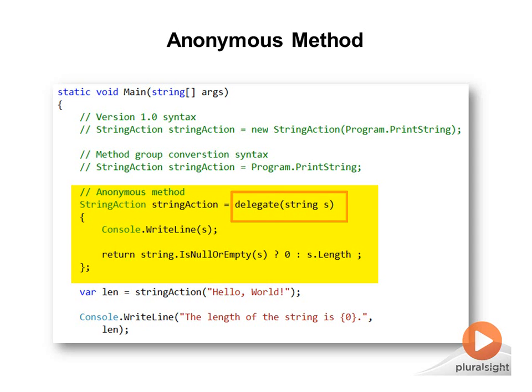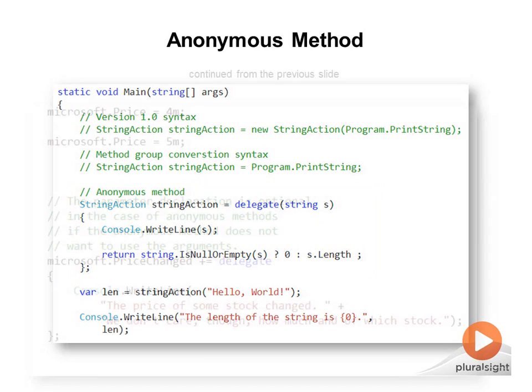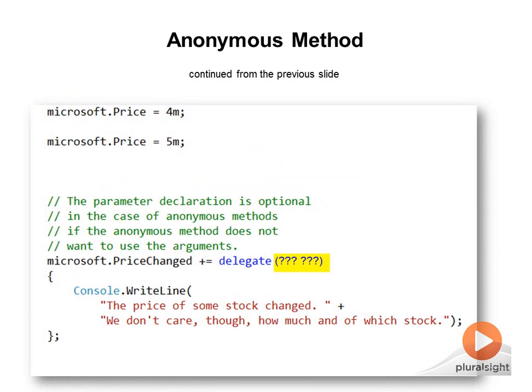Anonymous methods enable you to omit the parameter list. This means that if the method body does not use the arguments, the anonymous method may not define them as parameters, even though callers may pass the arguments at runtime.